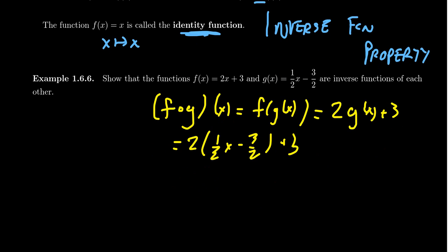To begin with, we can distribute the 2, which is pretty nice because all of the 1 halves that are in play there. You're going to get 2 times 1 half, which is just 1. So you just get an X. You're going to get 2 times negative 3 halves, which is just negative 3. And then you get a plus 3.